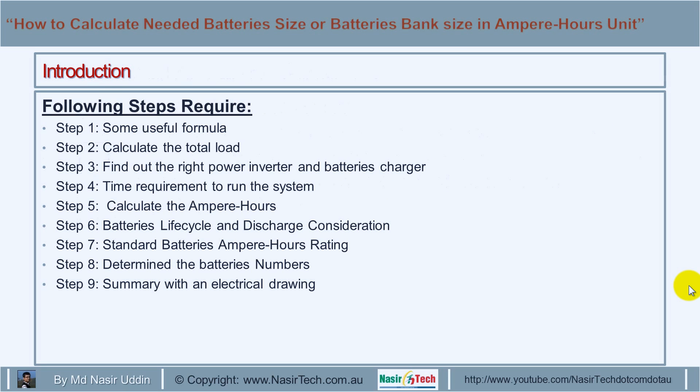To calculate battery size for any application, you need to perform the following steps: Step 1, some useful formulas. Step 2, calculate the total load. Step 3, find the right power inverter and battery charger. Step 4, time requirement to run the system. Step 5, calculate the ampere hour. Step 6, battery life cycle and discharge consideration. Step 7, standard battery ampere hour rating. Step 8, determine the battery number. Today I will also show Step 9: an electrical drawing summarizing all steps one to eight.